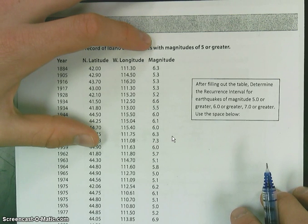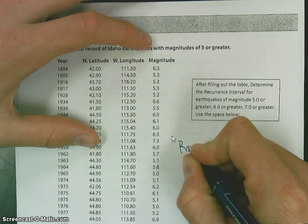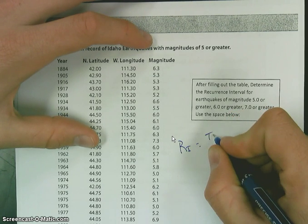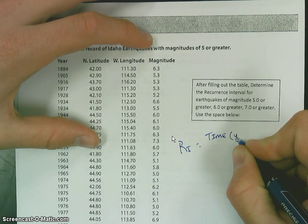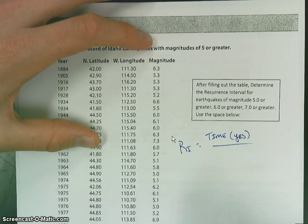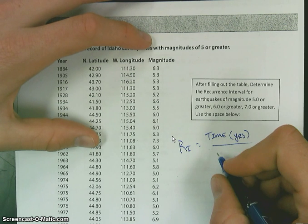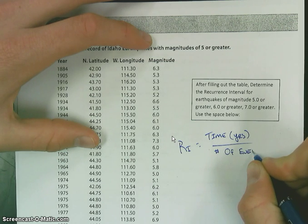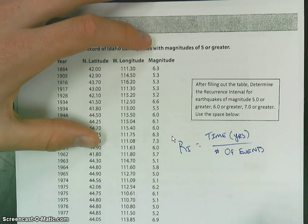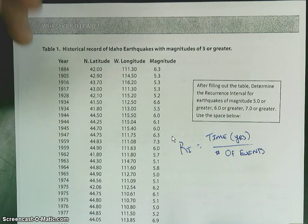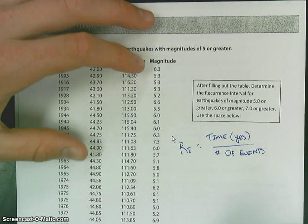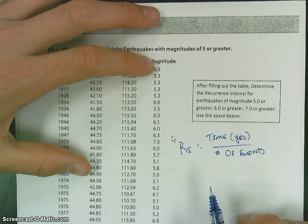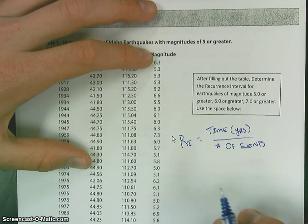By this time you've already read about and learned about recurrence interval. Recurrence interval is the amount of time — typically in years from a geology standpoint — divided by a number of events. They can be events of a given magnitude, a given size, maybe events that produced a certain amount of destruction. Essentially, it is a period of time that we have between events of that magnitude.